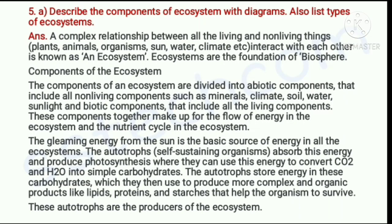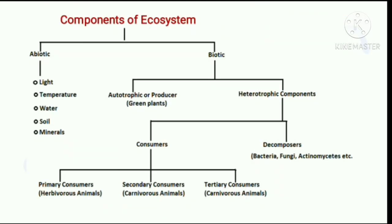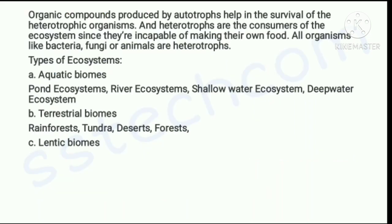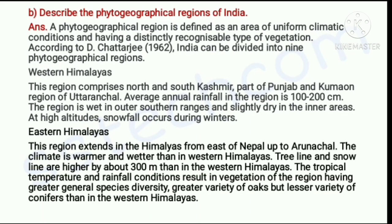Question number five, part A: describe the components of an ecosystem with diagrams and also list the types of ecosystem. Question number five, part B: describe the phytogeographical regions of India.